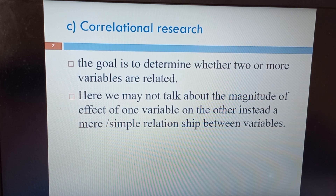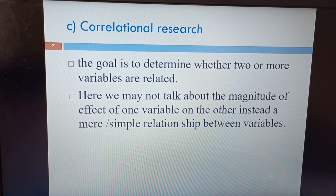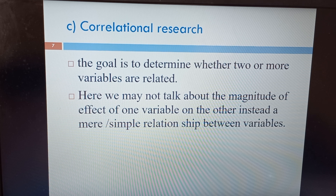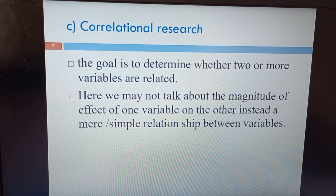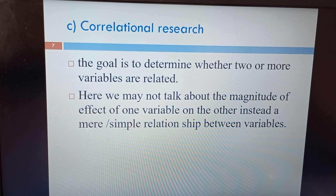The third is correlational research. In correlational research, the goal is to determine whether two or more variables are related or not. However, correlational research does not tell us what variable causes which variable, and it does not tell us the direction, magnitude, or effect size of the independent variable on the dependent variable. It simply tells us whether two variables are correlated or not — a mere correlation between variables.